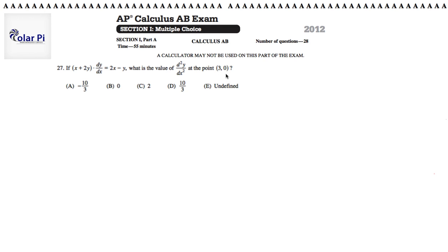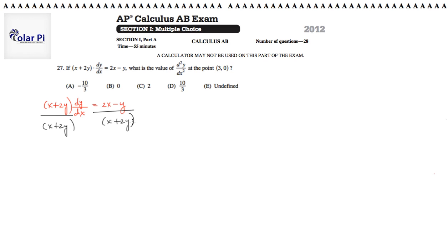We just need to evaluate the second derivative at the point (3, 0) — that seems fairly straightforward. First, because we start off with x plus 2y times dy/dx, and dy/dx is not solved for, we will solve for dy/dx. We divide by x plus 2y, and so we get that dy/dx is equal to 2x minus y over x plus 2y.